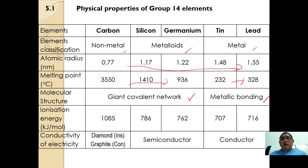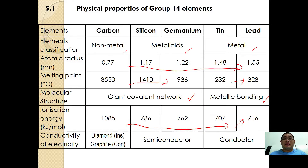In terms of ionization energy, as you can see, they are generally decreasing, but when it reaches lead it suddenly increases a little bit — I will explain the reason later. As for electrical conductivity, carbon has two allotropes: diamond is an insulator while graphite is a conductor. Silicon and germanium, being metalloids, are semiconductors, while tin and lead are conductors of electricity.